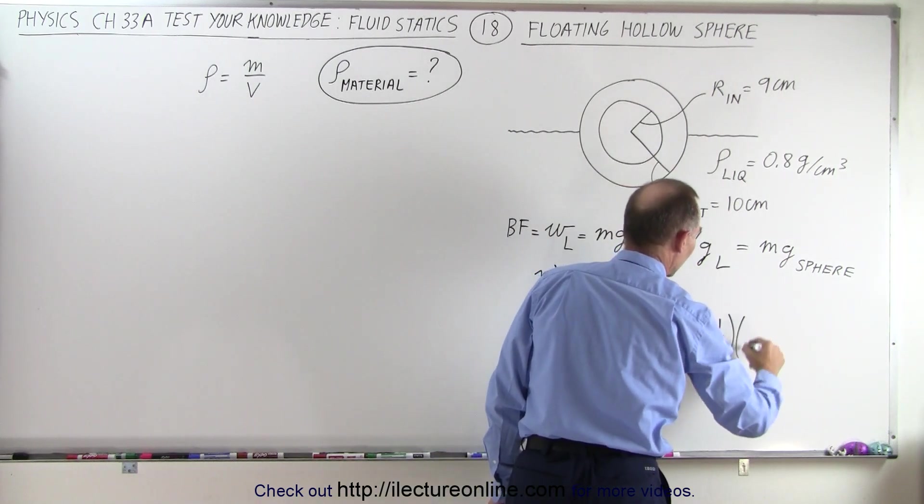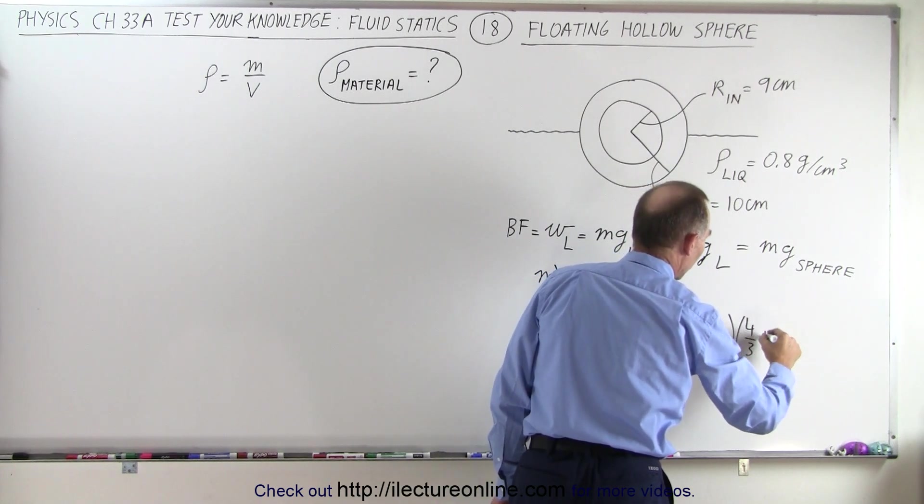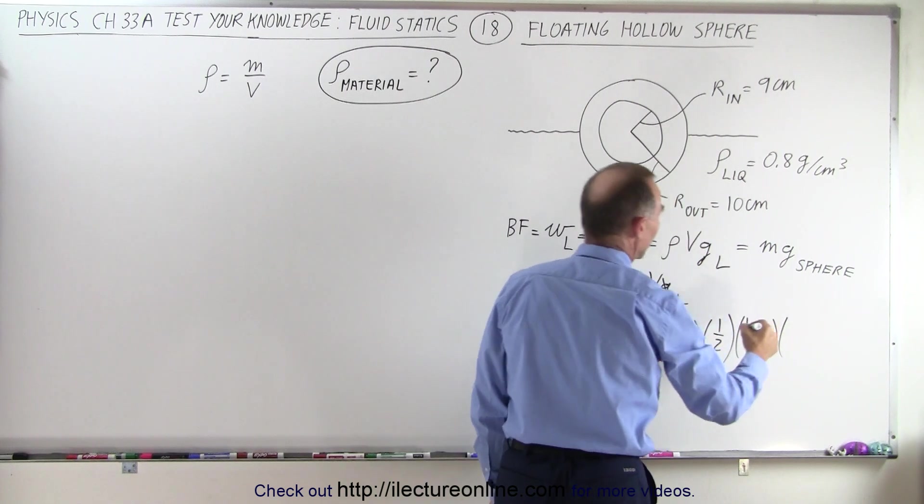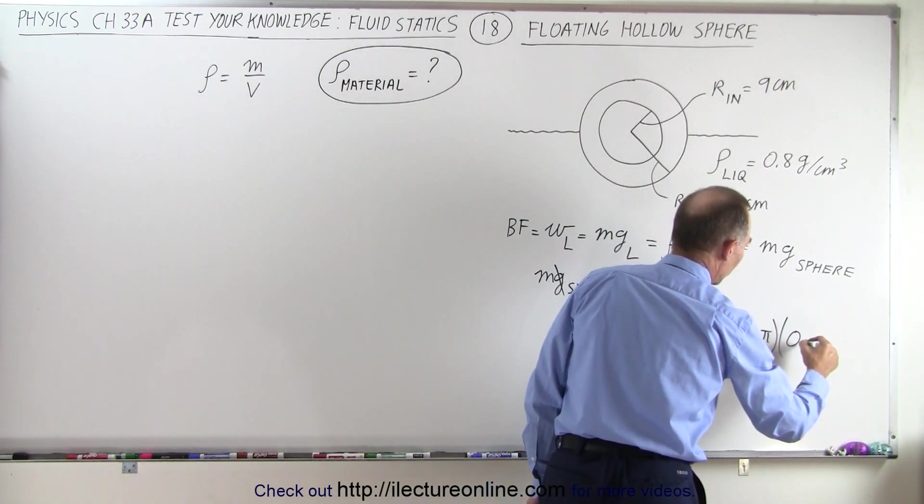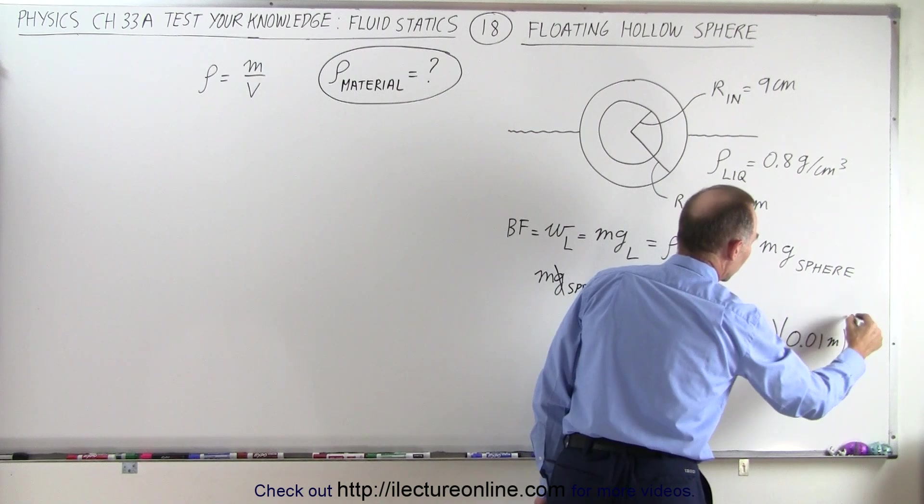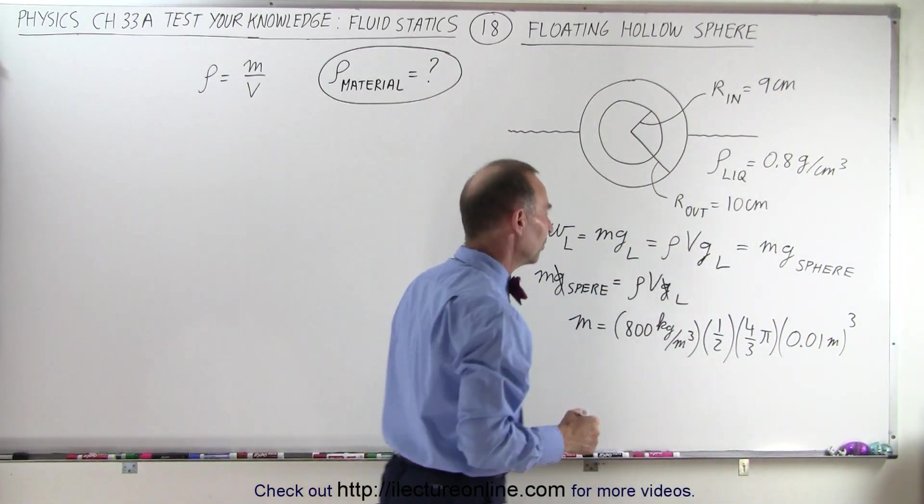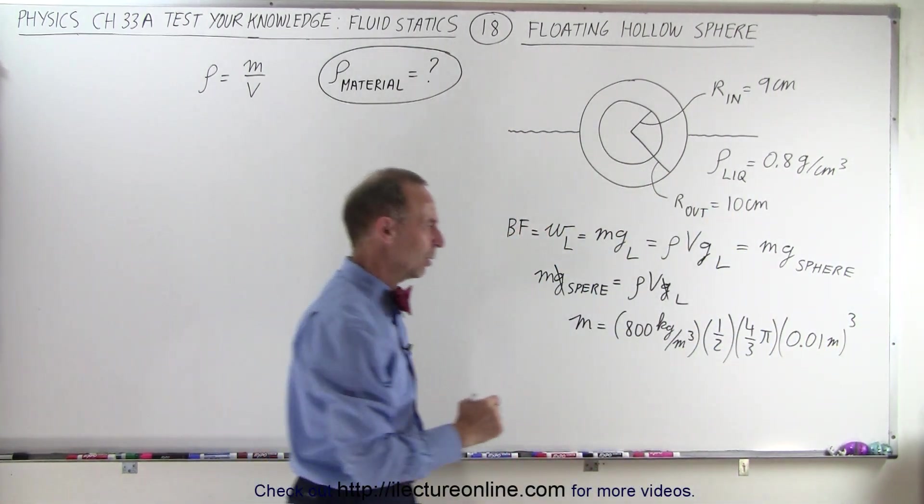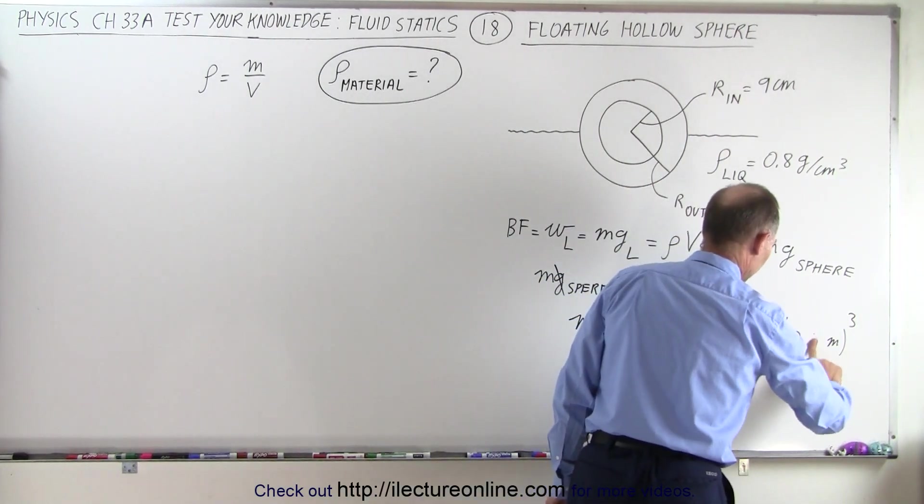So it would be one-half times four-thirds pi, times the radius cubed, then the radius would be 0.01 meter quantity cubed, because it's 10 centimeters converted to meters. Wait a minute, that doesn't sound right.